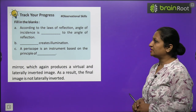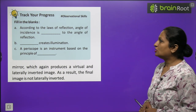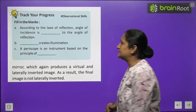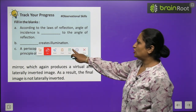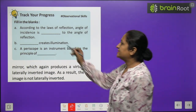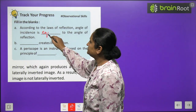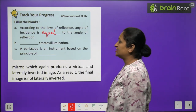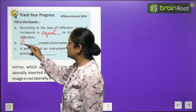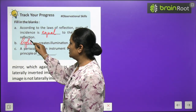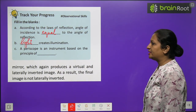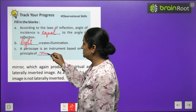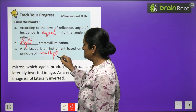Track your progress: fill in the blanks. According to the law of reflection, angle of incidence is equal to angle of reflection. Light creates illumination. A periscope is an instrument based on the principle of multiple reflections.